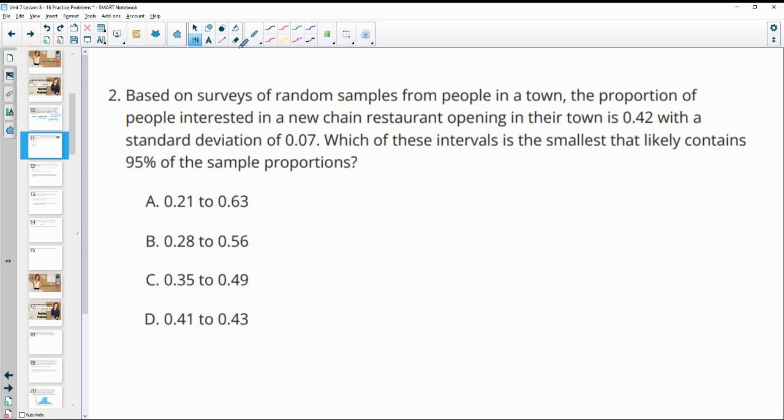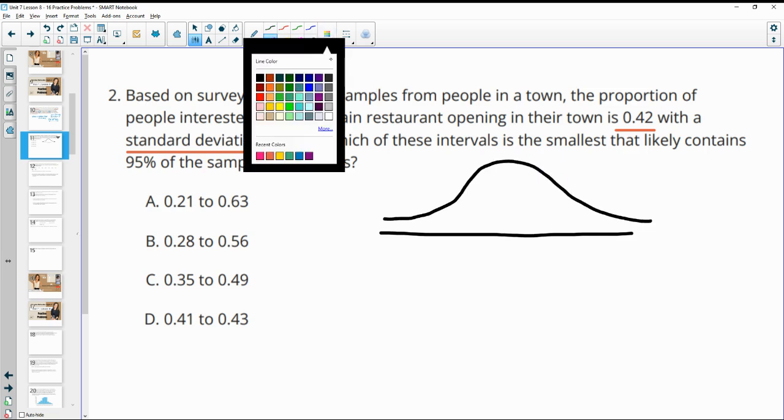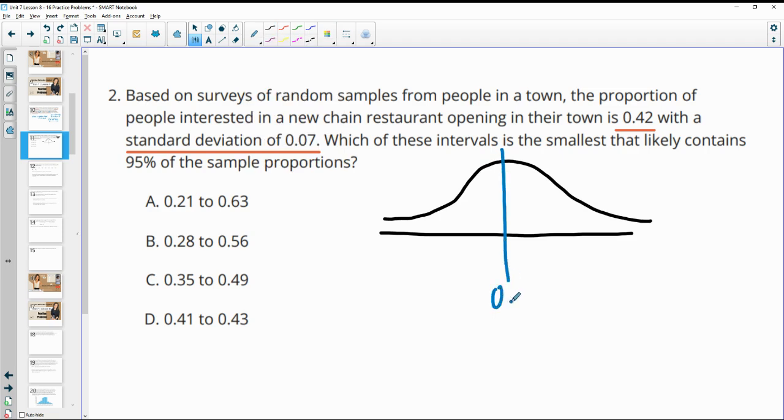Number two, based on surveys of random samples of people in town, the proportion of people interested in a new chain restaurant opening in their town is 0.42 with a standard deviation of 0.07. Which interval is the smallest likely to contain 95% of the sample proportions? So remember that 95% of data is between the margin of error or two standard deviations away from your mean. And so our mean here is 0.42. And then they're giving us standard deviation of 0.07.